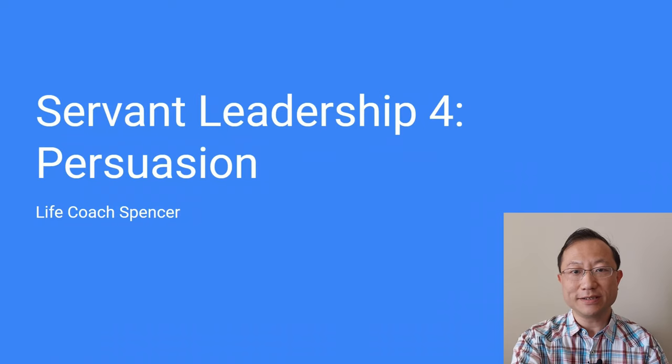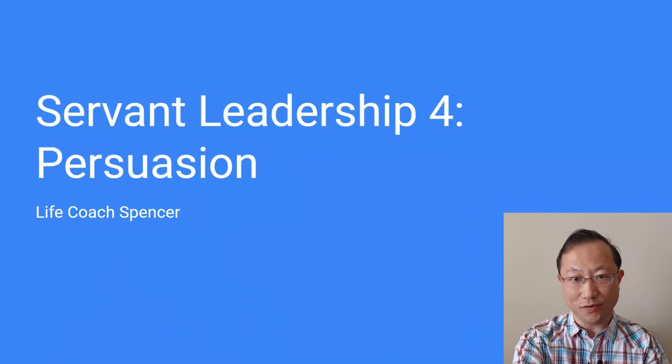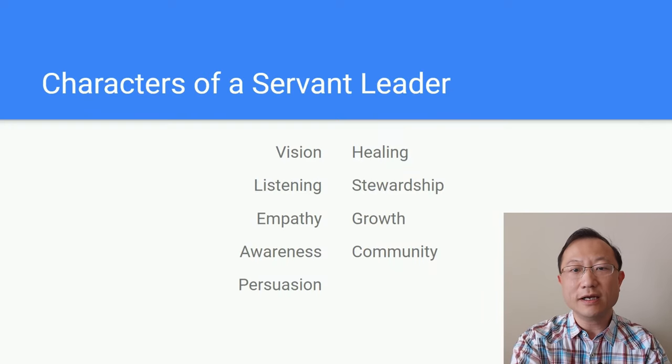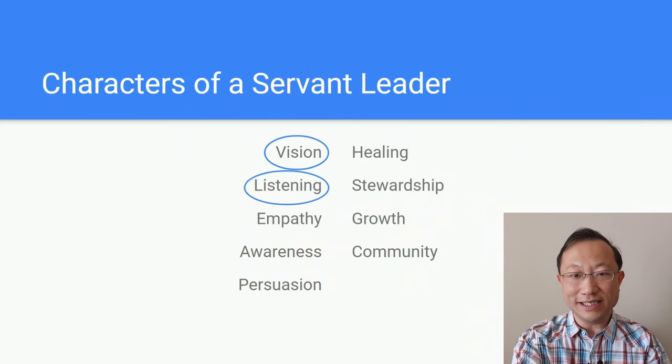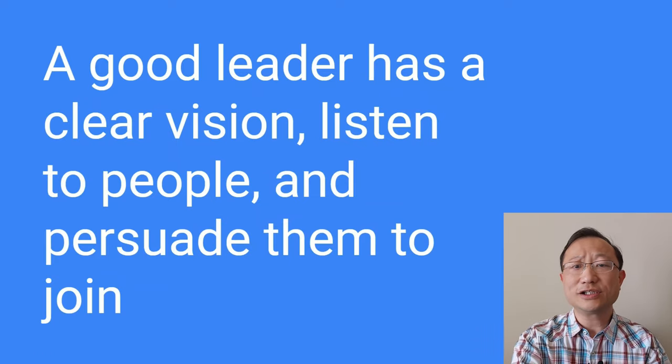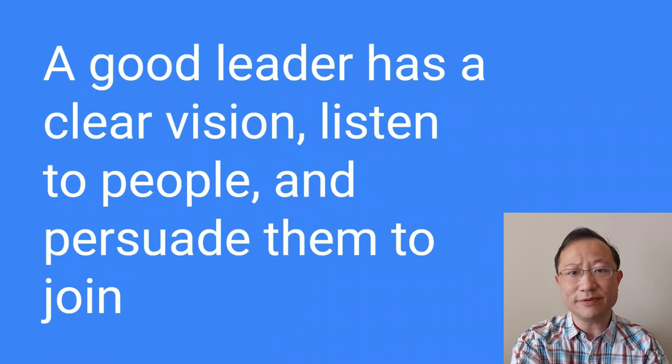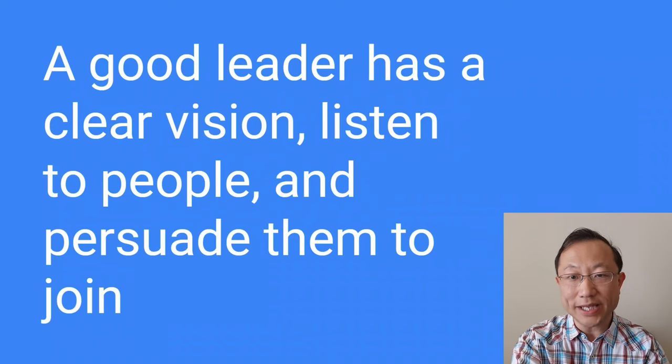This is the fourth video about servant leadership. In the first video, I gave an introduction to the concept of servant leadership. A servant leader serves to lead. Servant leadership is about the attitude of a leader toward the people he or she leads and serves. In order to explore how to implement servant leadership in daily operation, we start to discuss characters of a servant leader. We have talked about the vision of a servant leader. A good leader sees a need and tries to meet that need. Then we talked about listening. A good leader listens to the people so that they feel that they are understood and start to trust the leader. In this video, we will explore persuasion. So, a good leader has a clear vision. He or she is passionate about the vision and convinced that the vision heads in the right direction. But the leader listens to the people and tries to understand different opinions. And the leader persuades them to join in.